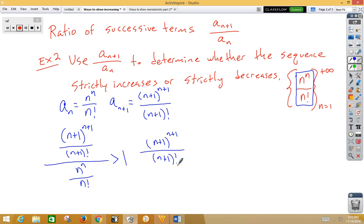So I've got n plus 1 to the n plus 1 over n plus 1 factorial, multiply by the reciprocal n factorial over n to the n. And we're trying to see if that's greater than 1.